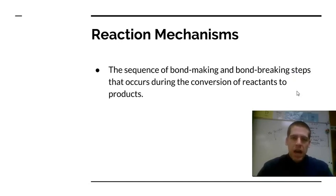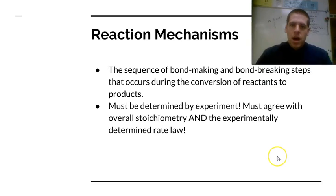The mechanism of a reaction is just the sequence of elementary steps. It shows the bonds that have to be broken and the bonds that have to be formed in order for a reaction to actually go from products to reactants. It has to be determined by experiment because this is happening at the atomic level. We can't really see what's really going on. The mechanism must agree with the overall stoichiometry and with the rate law.